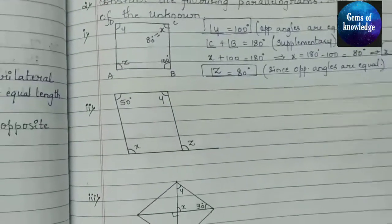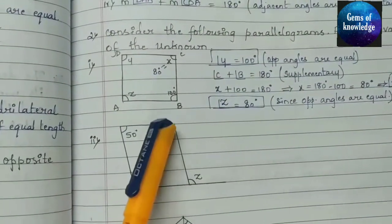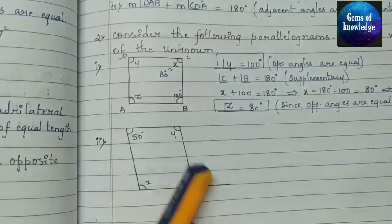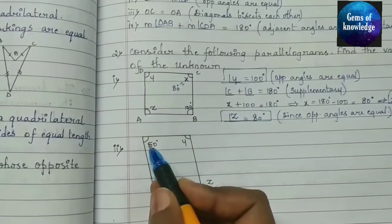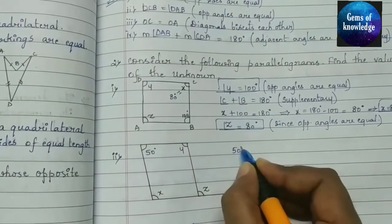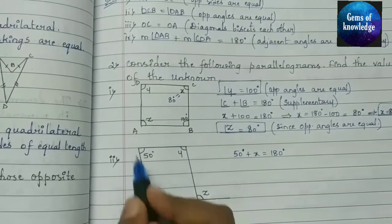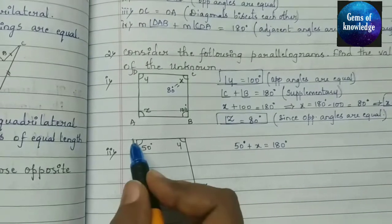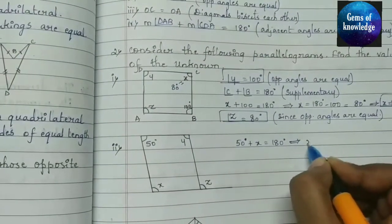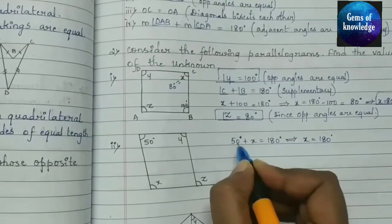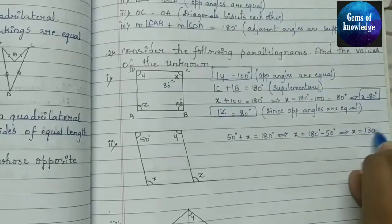In the second parallelogram, one angle is given as 50 degrees. Since these are adjacent angles, 50 plus X equals 180 degrees. Therefore X equals 180 minus 50, which gives X equals 130 degrees. Since opposite angles are equal, angle Y also equals 130 degrees.